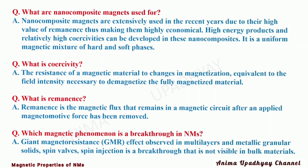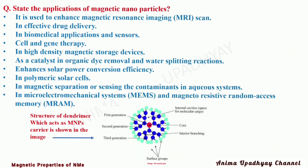Which magnetic phenomenon is a breakthrough in nanomaterials? Giant magnetoresistance — the GMR effect — observed in multilayers and metallic granular solids, spin valves, and spin injection is a breakthrough that is not visible in bulk materials.